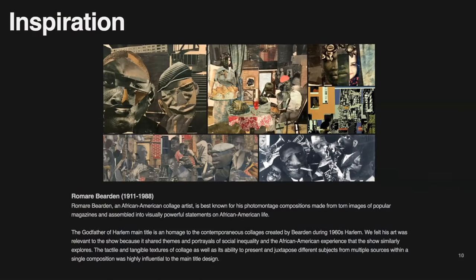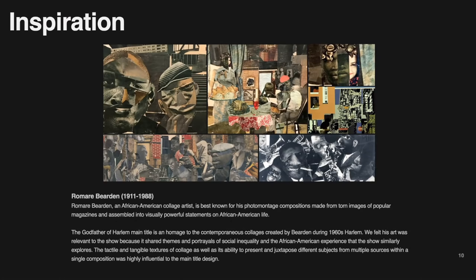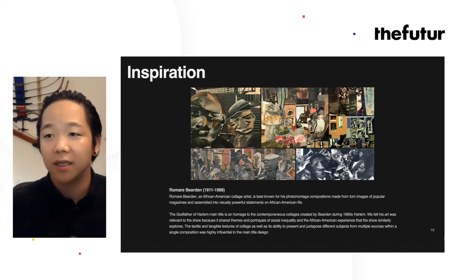Romare Bearden was a Black artist who actually lived in Harlem in the 60s — exactly the same setting and time period as this show. He's most known for his photo montage compositions that used torn magazines, different photographs, and textures to assemble powerful statements on African-American life. We felt his art was relevant because it shared themes and portrayals of social inequality and the African-American experience. The tactile and tangible textures of the collage, and its ability to juxtapose different subjects from different sources within a single composition, was highly influential.